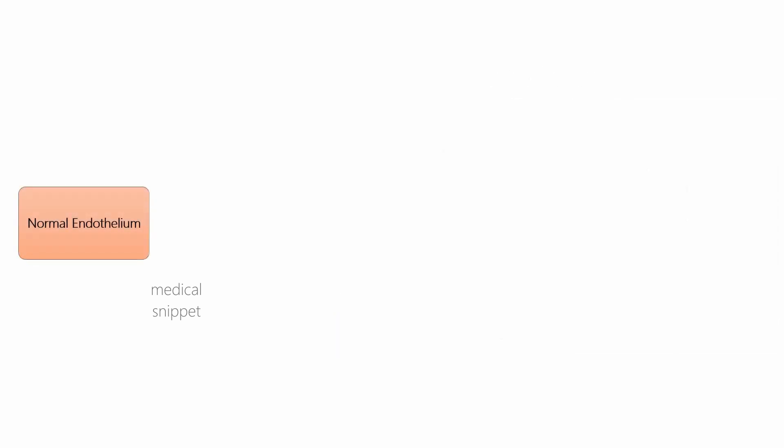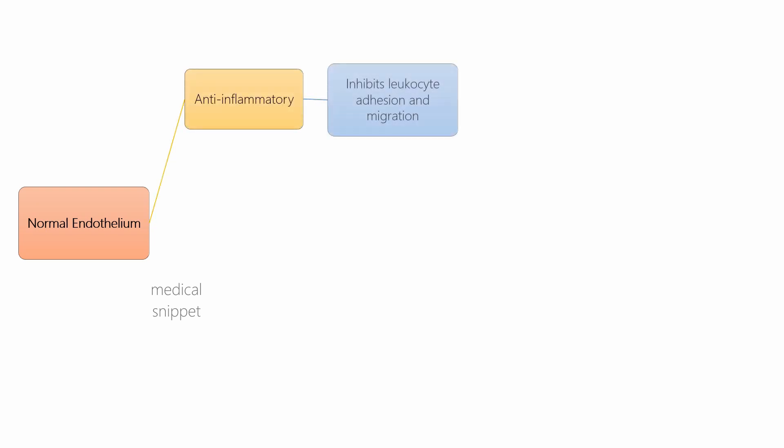The vasa vasorum supplies nutrients to the adventitia and the outer layers of the tunica media. Another important thing to be discussed before proceeding to the pathogenesis of atherosclerosis is the function of the endothelial cells. Endothelial cells are multifunctional cells.